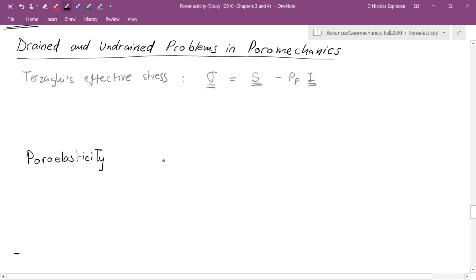In poroelasticity we also have an equation of the effective stress which now it is going to be equal to the total stress minus the Biot coefficient times the pore pressure times the identity tensor. And in this case this is what we call Biot effective stress.